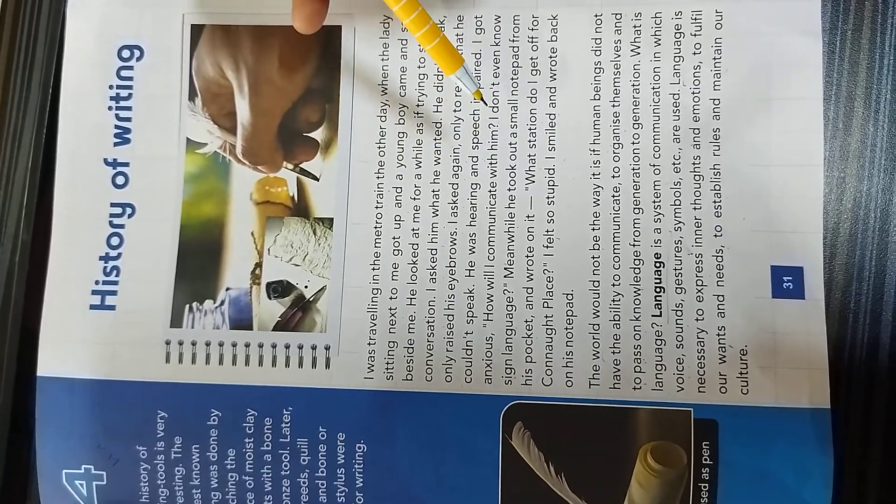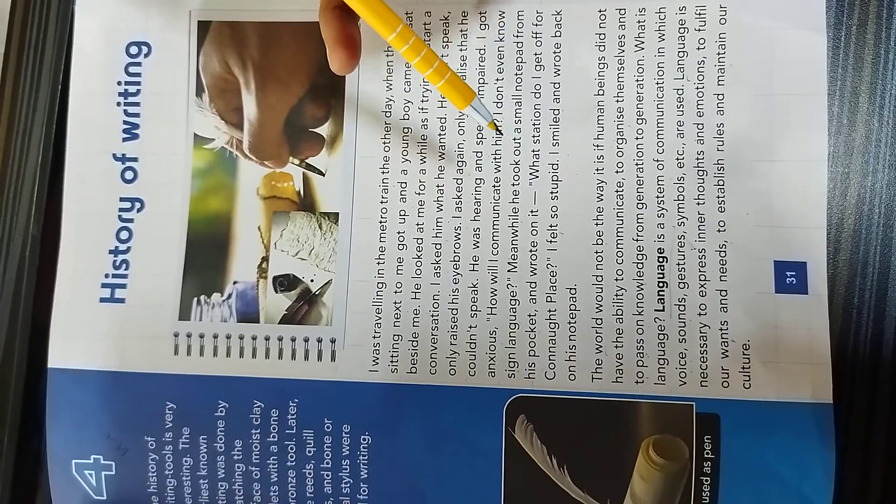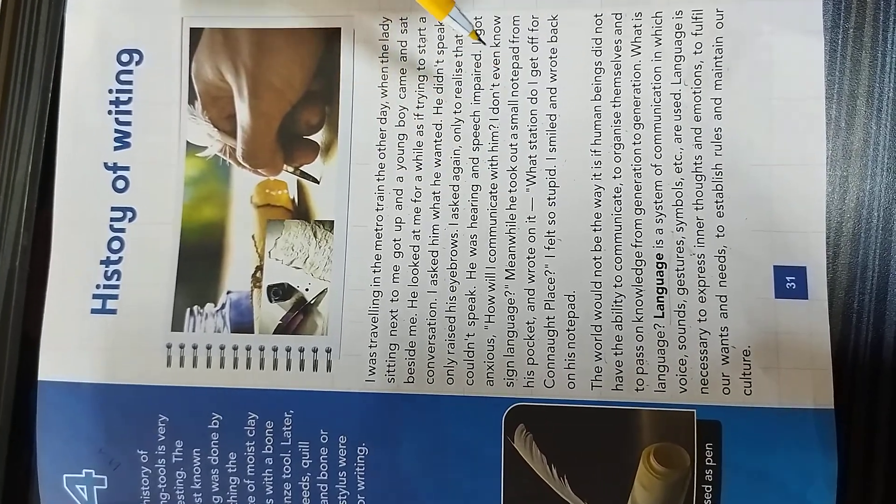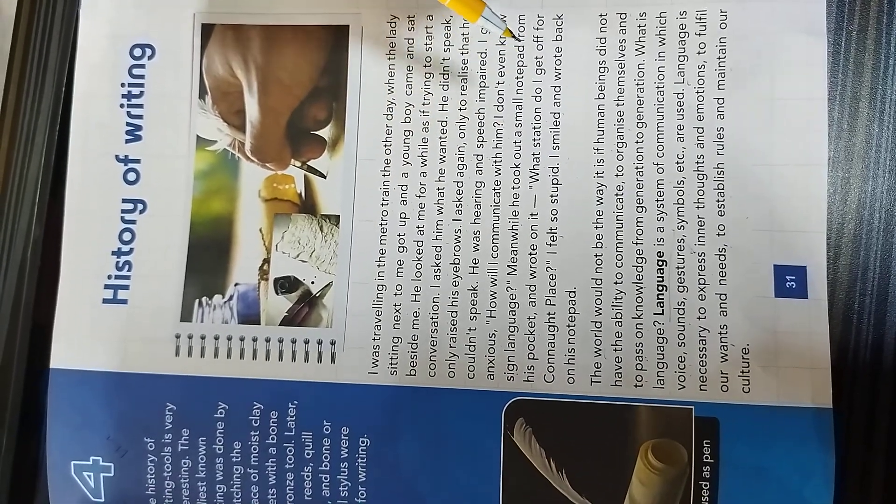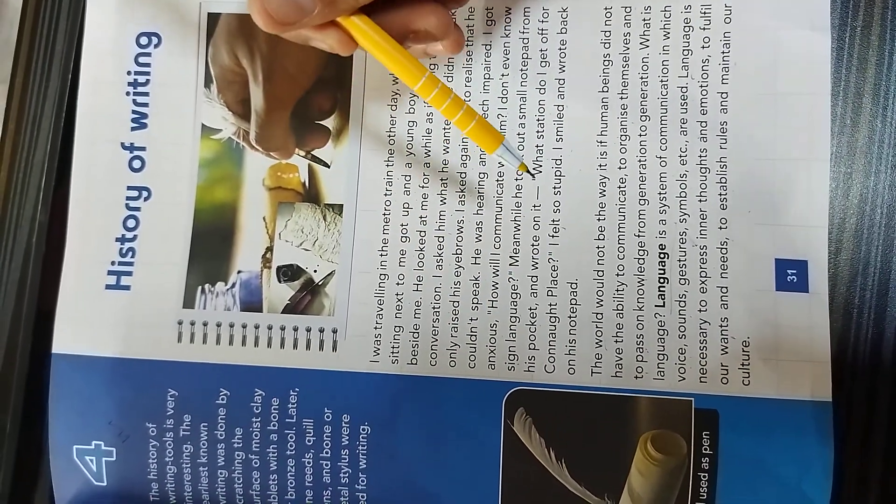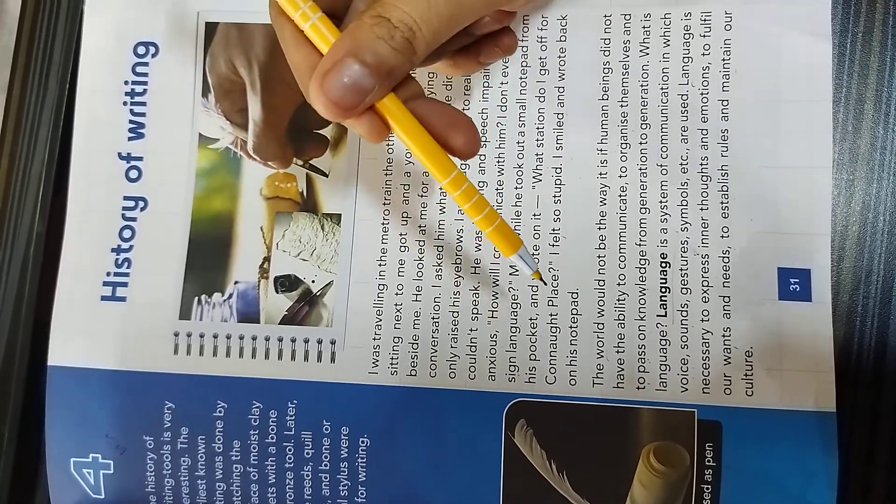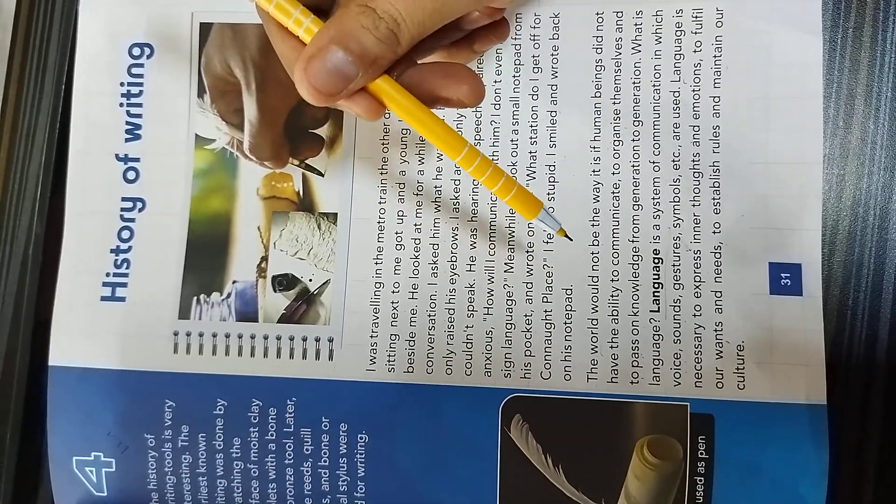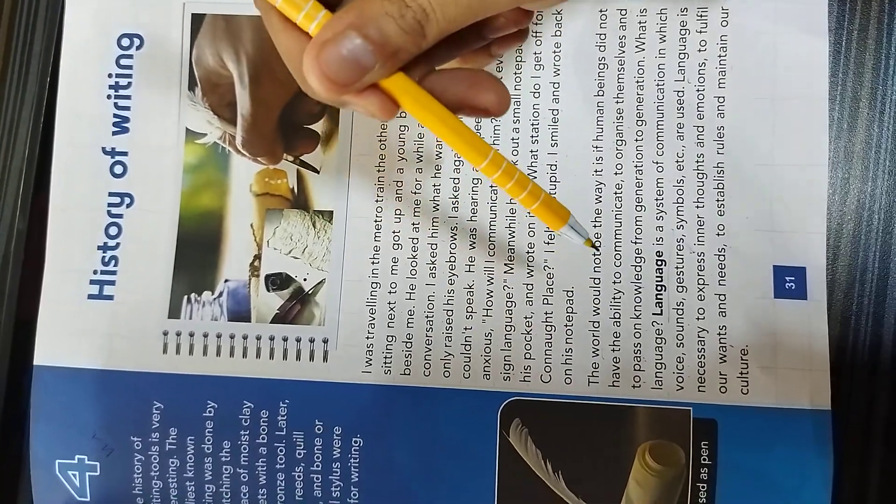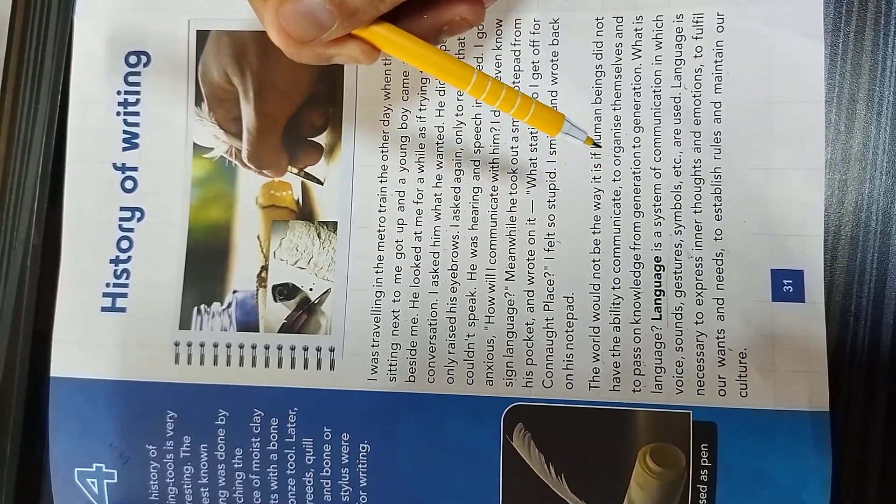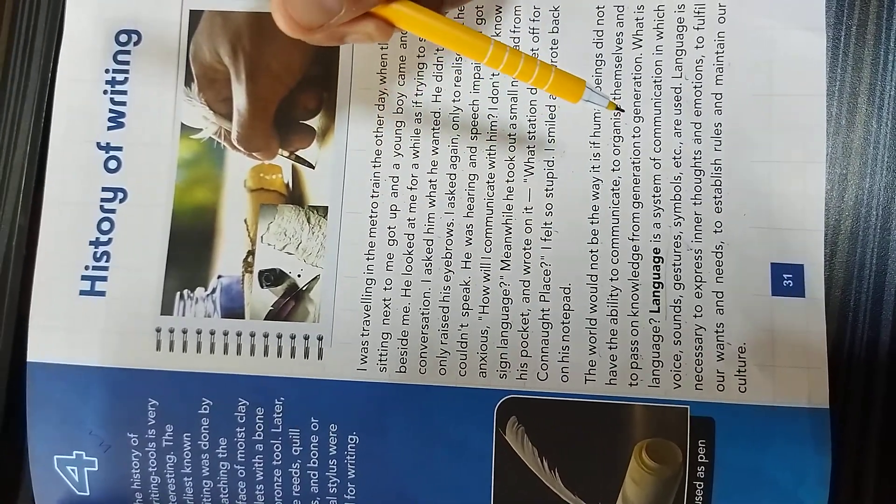How will I communicate with him? I don't even know sign language. Meanwhile, he took out a small notepad from his pocket and wrote on it, what station do I get off for Knot Place? I felt so stupid. I smiled and wrote back on his notepad. The world would not be the way it is if human beings did not have the ability to communicate, to organize themselves and to pass on knowledge from generation to generation.